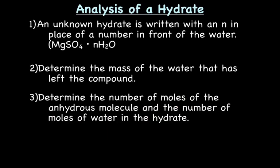So next, we're going to determine the number of moles of the anhydrous molecule, which in this case is our MgSO4 that we figured out. We figured out the mass of that. And we're going to figure out the number of moles of the water, which we also just figured out the mass. We just convert that to moles.